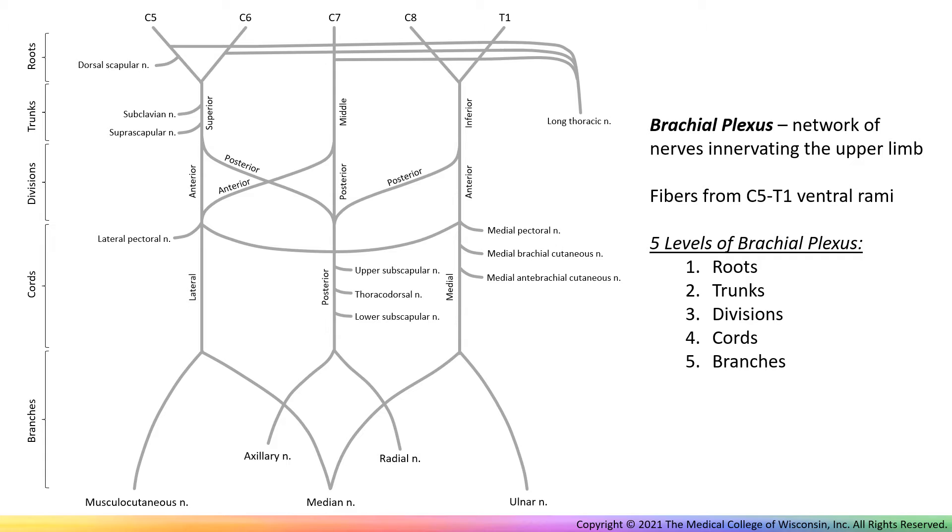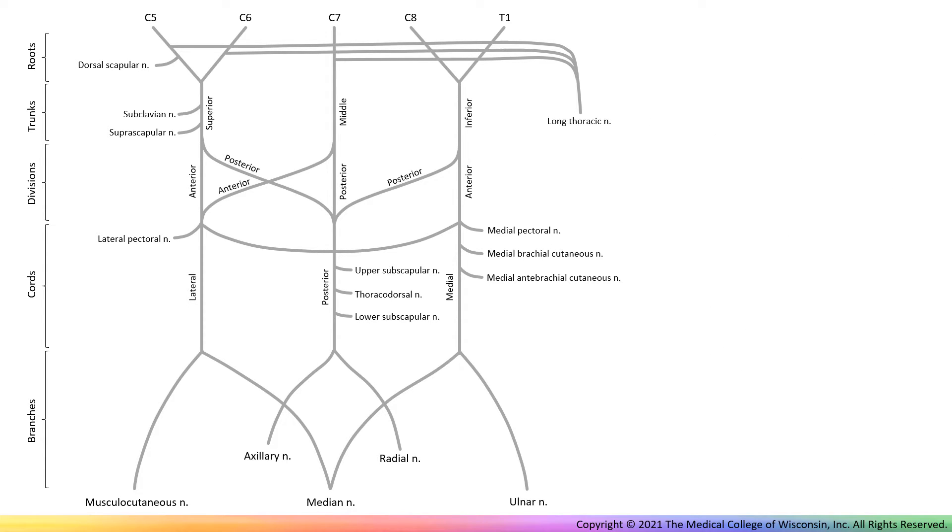Roots, trunks, divisions, cords, and branches. Understanding the structure of the brachial plexus along with motor and sensory functions of its branches is important for determining where lesions have occurred in a patient.